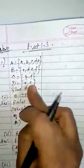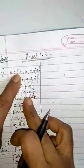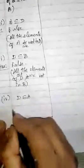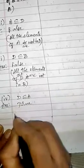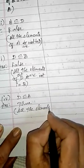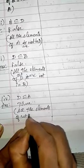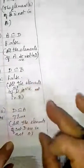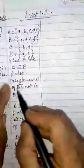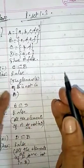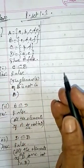So is it clear, children? The elements of D are A and E. A is in the bigger set A, and E is in the bigger set A. So it is true. Write the answer: True. For the reason, write: all the elements of set D are in set A. In the first sum also, instead of writing the specific element, you can write: all the elements of set C are not in set B.